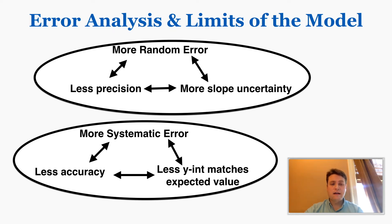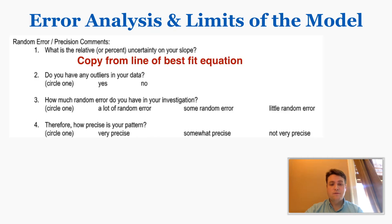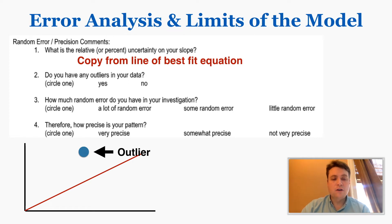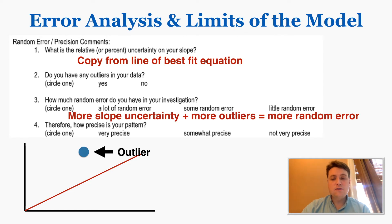The first question in the error analysis section is: what is the relative or percent uncertainty of your slope? You copy this from your best fit equation done a few pages back. The next question is: do you have any outliers in your data? An outlier is a data point that is far away from all your other data points — you just answer yes or no. If you have more slope uncertainty and more outliers, that means you have more random error.